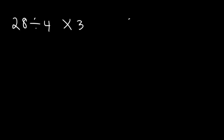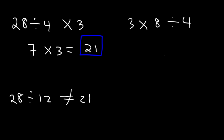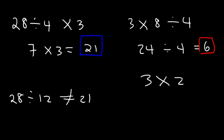Let's try two examples. First: 28 divided by 4 times 3. Working left to right: 28 divided by 4 is 7, and 7 times 3 is 21. If you multiply 4 times 3 first, that's 12, and 28 divided by 12 is not 21 — so that's wrong. Second example: 3 times 8 divided by 4. Here multiplication comes first, so any order works. 3 times 8 is 24, and 24 divided by 4 is 6. Or: 8 divided by 4 is 2, and 3 times 2 is 6 — same answer.